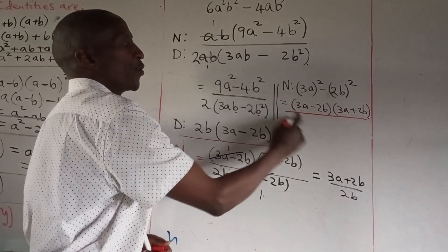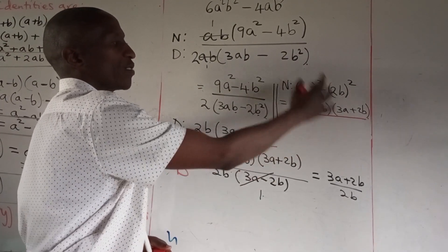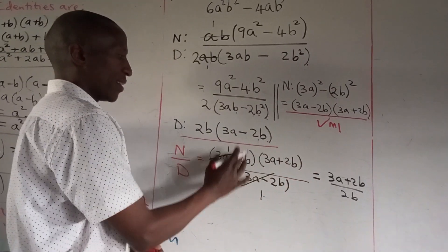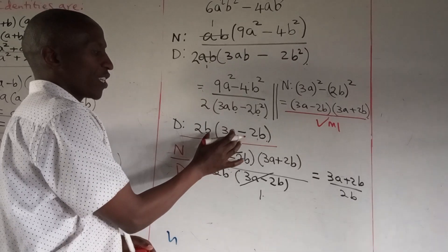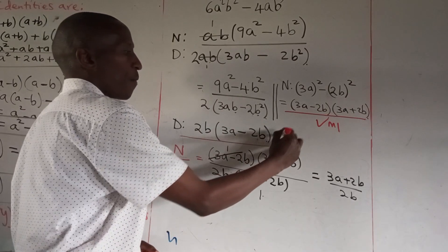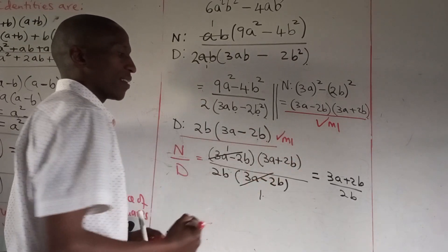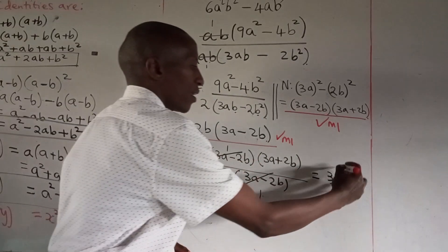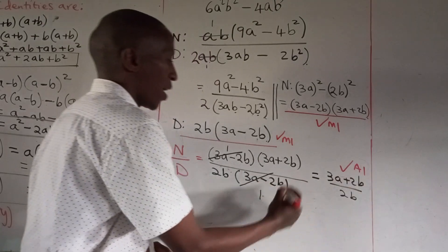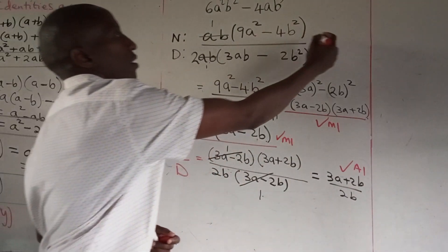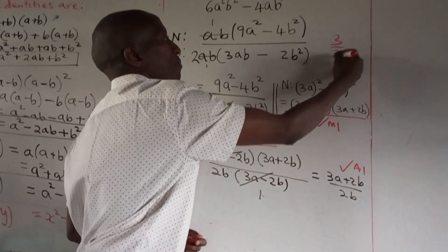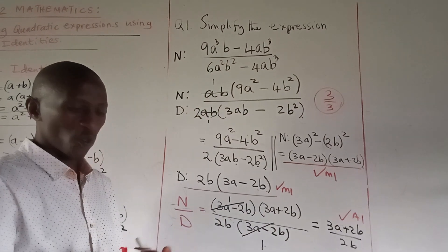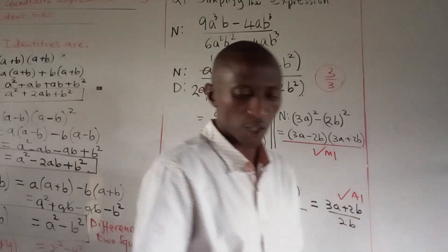For marking: when the student is able to work the numerator to its simplest factors, they earn M1; working the denominator to its simplest form earns another M1; and the final accurate answer earns A1. This question scores 3 marks out of 3.